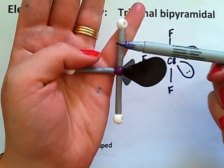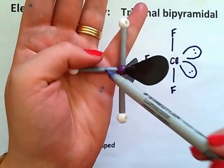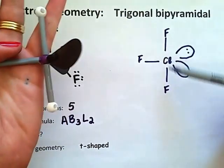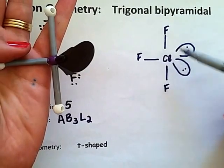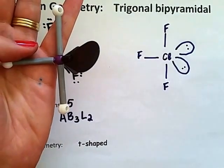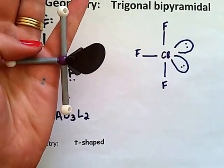In this we get what we call a T-shaped molecular geometry.